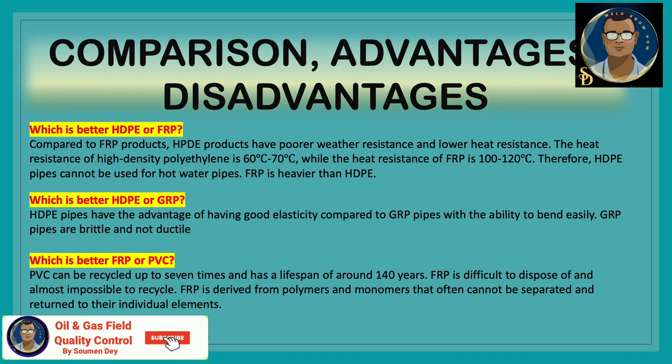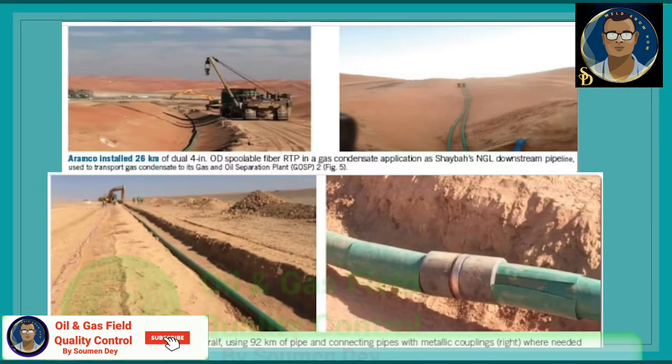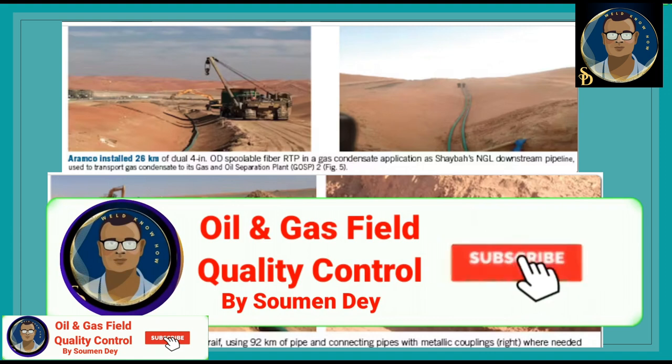Which is better: HDPE or GRP? HDPE pipe has the advantage of good elasticity compared to GRP pipes, with the ability to bend easily. GRP pipes are brittle and not ductile. Which is better: FRP or PVC? PVC can be recycled up to seven times and has a lifespan of around 140 years. FRP is difficult to dispose of and almost impossible to recycle, as it is derived from polymers and monomers that often cannot be separated and returned to their individual elements.